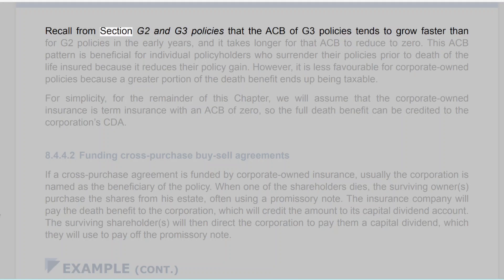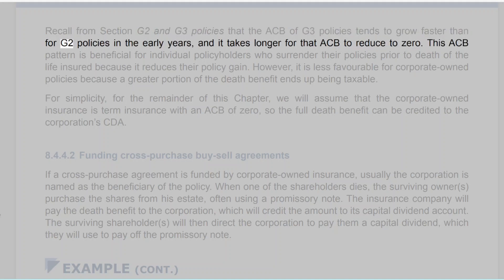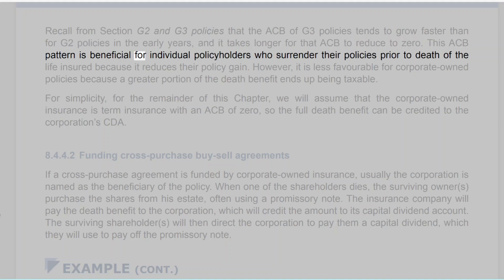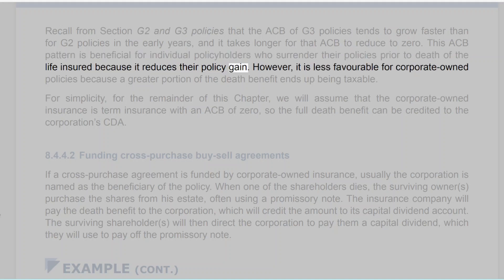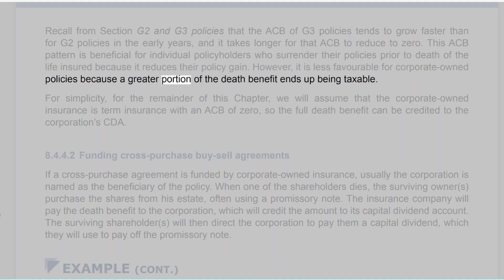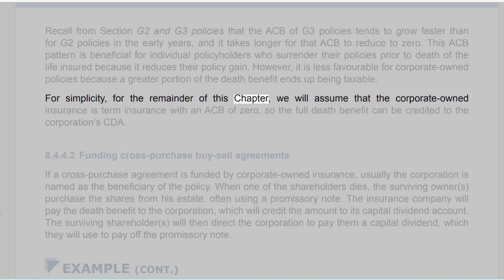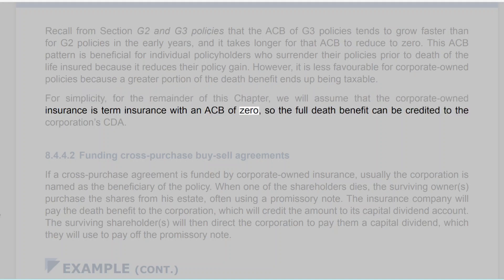In the case of a term policy, the ACB is zero, which means that the full death benefit can be credited to the CDA. However, for whole life or UL policies, a portion of the death benefit equal to the policy's ACB is taxable to the corporation. Recall that the ACB of Generation 3 (G3) policies tends to grow faster than for G2 policies in the early years, and it takes longer for that ACB to reduce to zero. This ACB pattern is beneficial for individual policyholders who surrender their policies prior to death because it reduces their policy gain, but it is less favorable for corporate-owned policies because a greater portion of the death benefit ends up being taxable. For simplicity, for the remainder of this chapter, we will assume that the corporate-owned insurance is term insurance with an ACB of zero, so the full death benefit can be credited to the corporation's CDA.